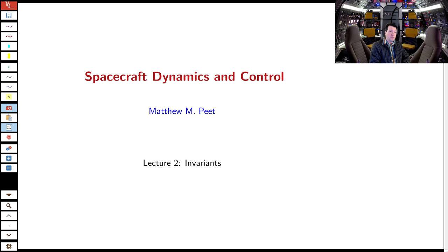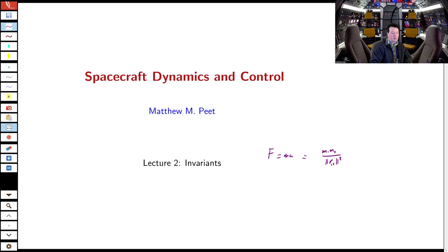After Kepler, Newton simplified the motion even further and said this is simply a result of F equals ma, where the force is the force of universal gravitation — the product of the two masses divided by the distance between them squared. So a single equation from which you can derive Kepler's three laws of planetary motion.